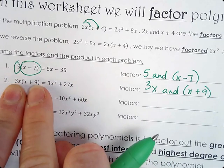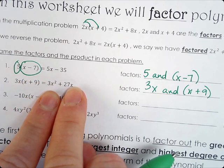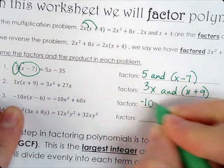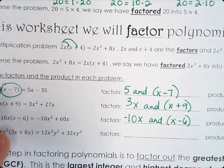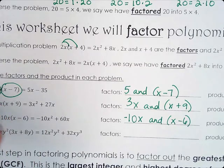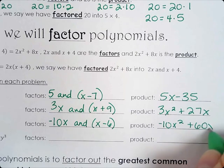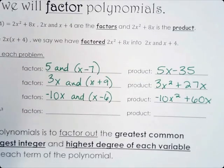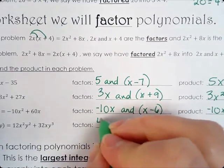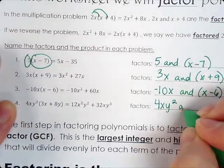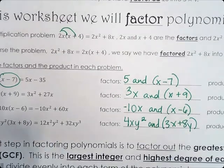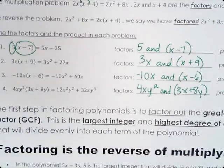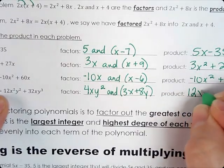The product is 3x squared plus 27x. These are equivalent — this is in factored form and this is in simplified form after you multiply it. The next one: the factors are negative 10x and (x minus 6), and the product is negative 10x squared plus 60x. Then the last one: our factors are 4xy squared, multiplied by (3x plus 8y), and the product is what is given after it is multiplied together.